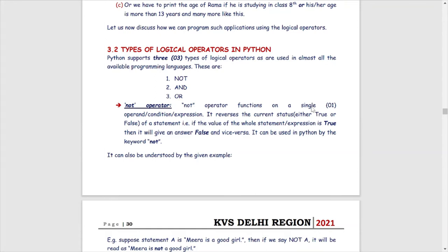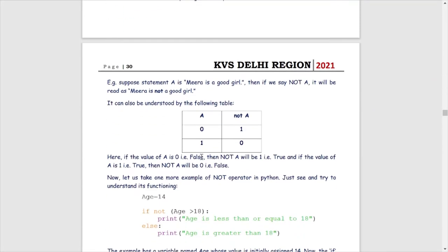The 'not' operator functions on a single operand, condition, or expression. It reverses the current status — either true or false — of a statement. If the value of the whole statement or expression is true, then it will give the answer false, and vice versa.